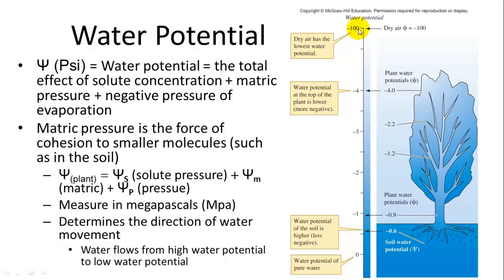And you can see on this diagram, the dry air has a negative 100 potential. So it is the most negative. It has the least water potential. As you go into the soil, the soil is negative 0.6, so it is the closest to zero, so it is the greatest amount. And as you go up the tree, this continues to become more and more negative, so water will flow up the tree.